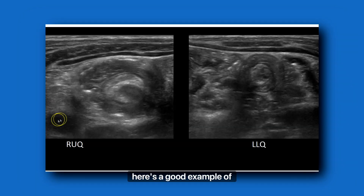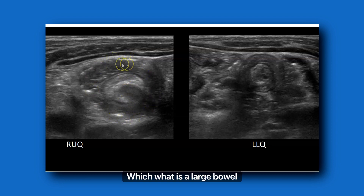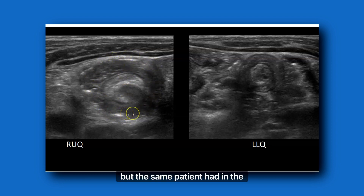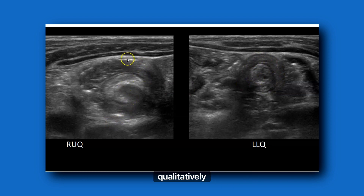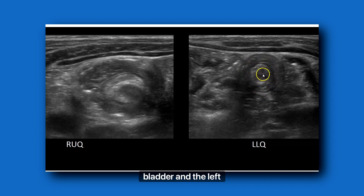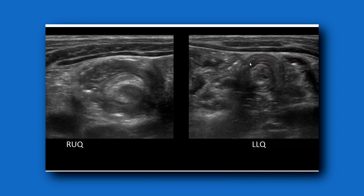Here's a good example of size. In the right upper quadrant you can see a large ileocolic intussusception, but the same patient had in the left lower quadrant a much smaller target lesion — also an intussusception. Qualitatively, you can see that this one is much bigger than the other. So if you see an intussusception anywhere in the midline by the bladder or the left side, it's going to be a small bowel intussusception. Just watch those, and they go away on their own.